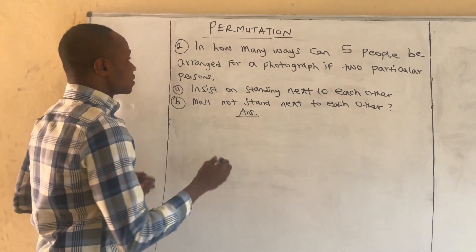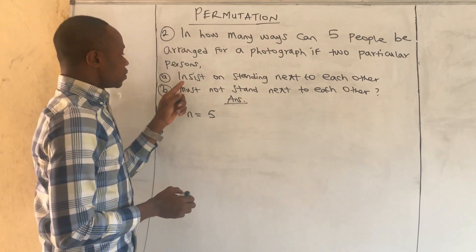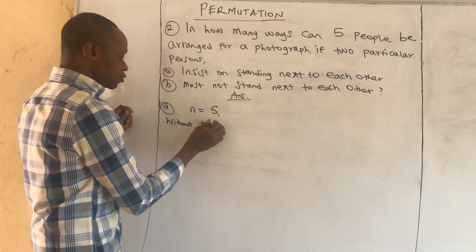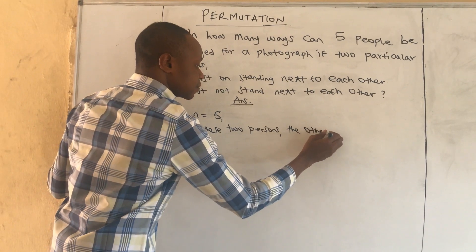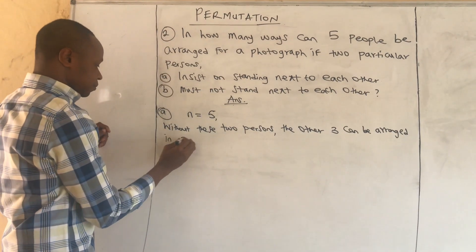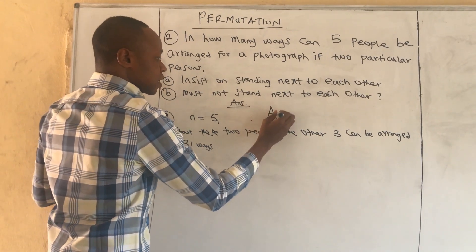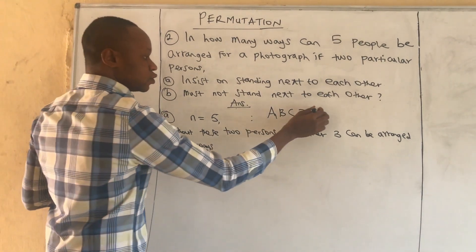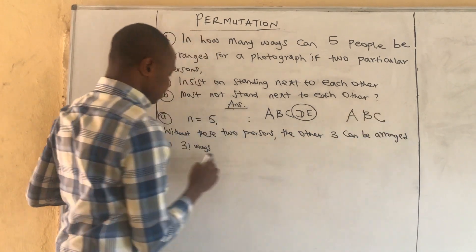For the first part, we have five people and two insist on standing next to each other. Without these two persons, the other three can be arranged. To illustrate, assume the five people are A, B, C, D, E. Two insist on standing together, so we arrange A, B, C in three factorial ways.